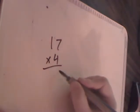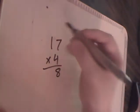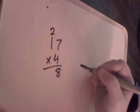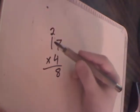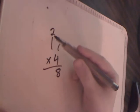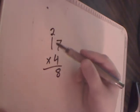4 times 7 is 28, so we're going to put an 8 down here. Carry that 2 all the way up top. Now you have 4 times 1, which is 4, and then you still have to add 2, so 4 plus 2 is 6. So you have your answer of 68.